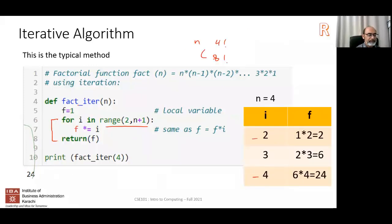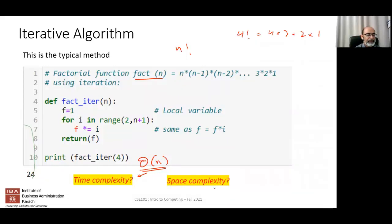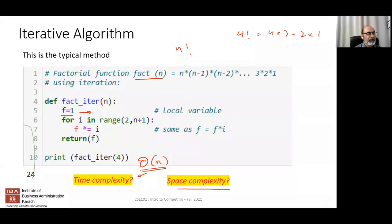The next question is: what is the space complexity? Space complexity means the amount of space this algorithm will use inside a computer's memory. Whenever you define a variable, for example f equals 1, it takes up some space in memory - like placing a book on a table, it occupies space.